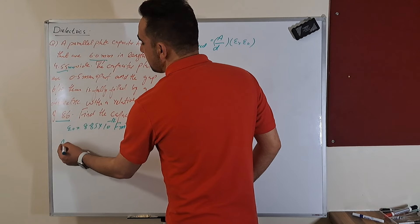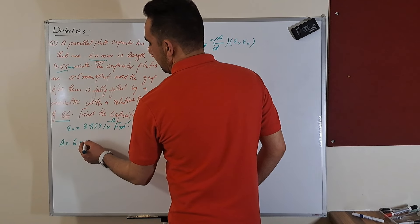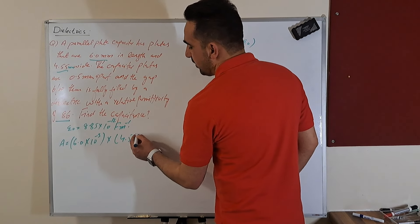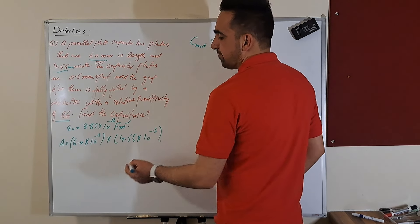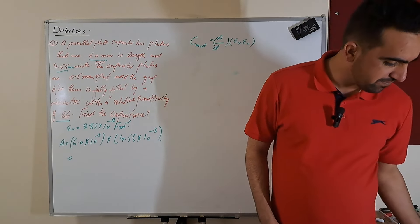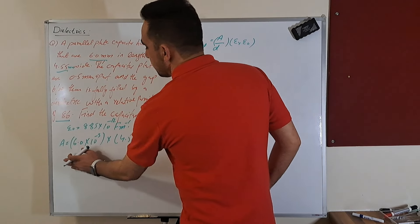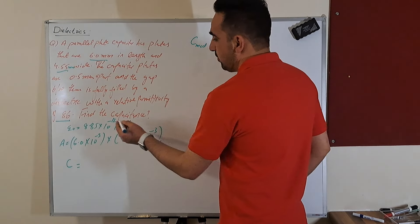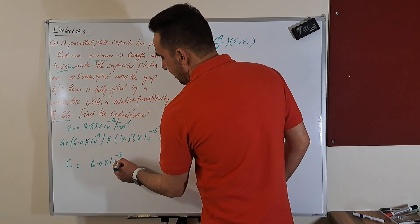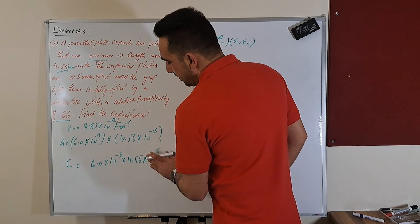The area of the plates becomes 6.0 times 10 to the power minus 3 — because it's in millimeters — multiplied by 4.55 times 10 to the power minus 3. We will get the area from here.